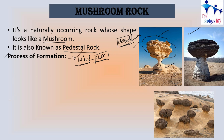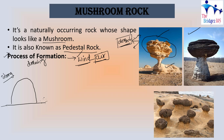First and foremost, these start as normal rocks present in an arid or desertic region. In this desertic region the wind is strong because there are no trees or other obstacles to stop it. When the wind blows, since this is a desertic area, there is a high amount of sand. This sand will have sand grains of varying sizes.